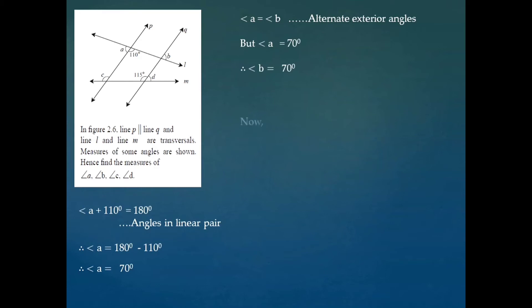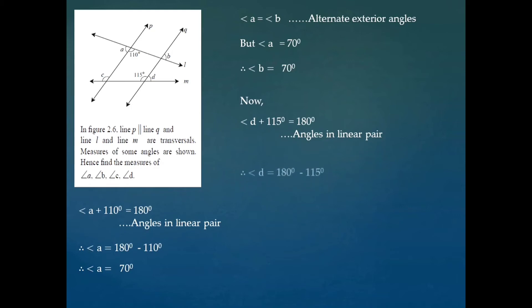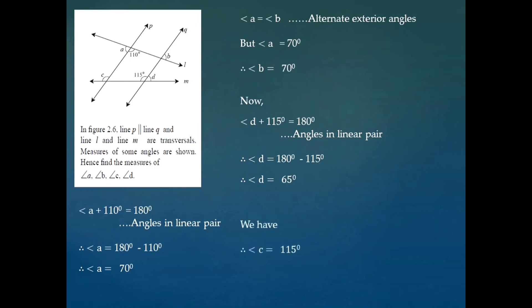Now to find the measure of angle D: angle D plus 115 is equal to 180 degrees, because these two are again angles in a linear pair, so they must be supplementary. Transferring 115 degrees to the right hand side, we get angle D is equal to 180 minus 115, that is equal to 65 degrees.